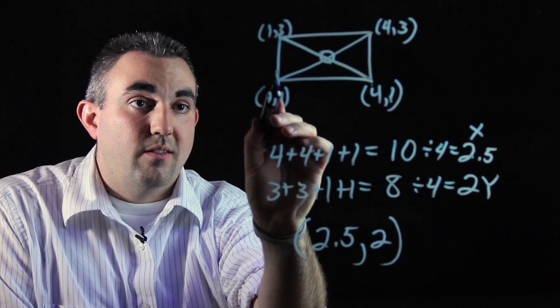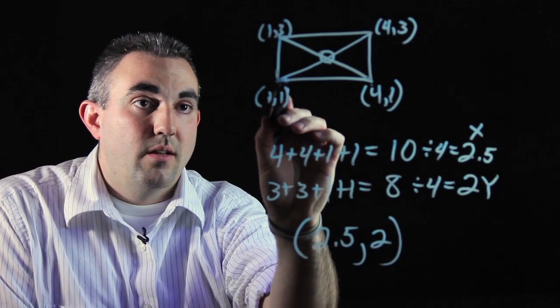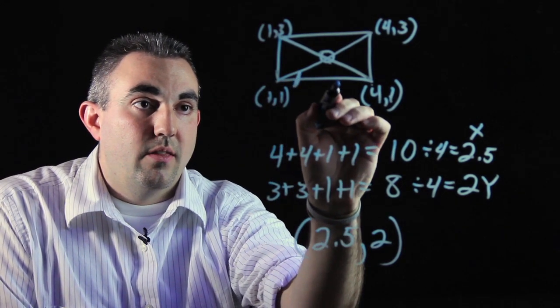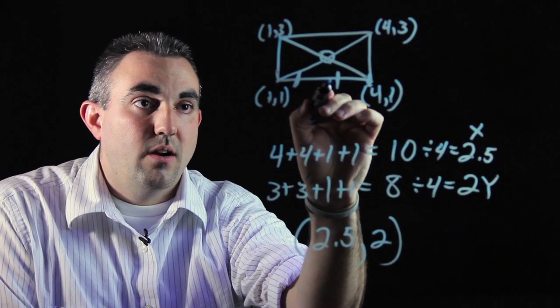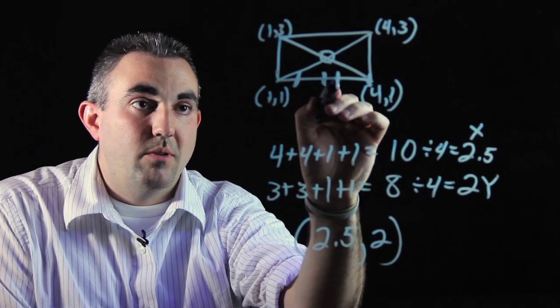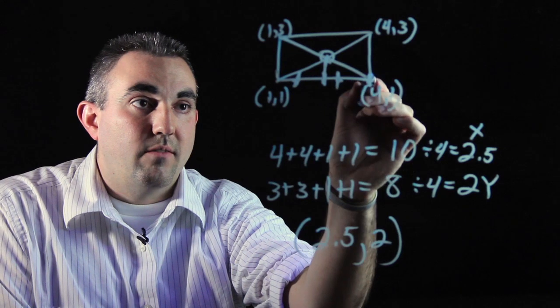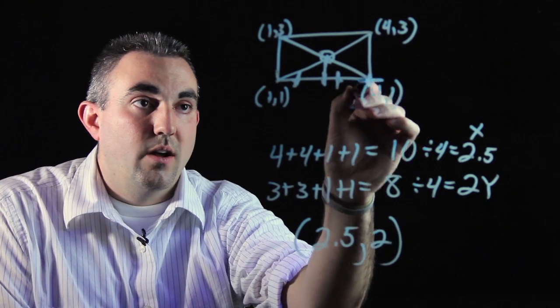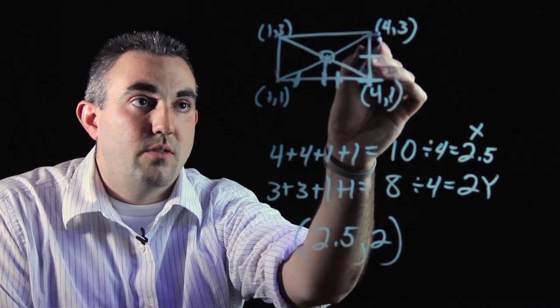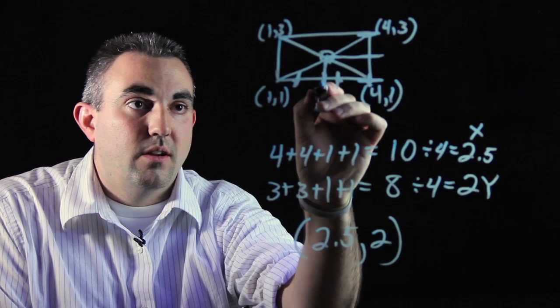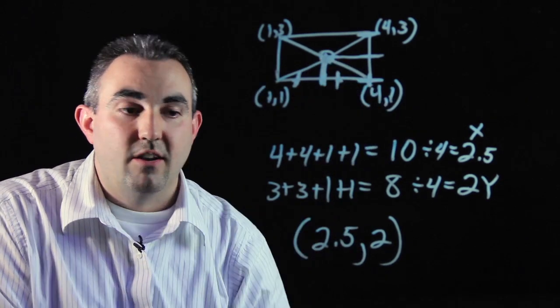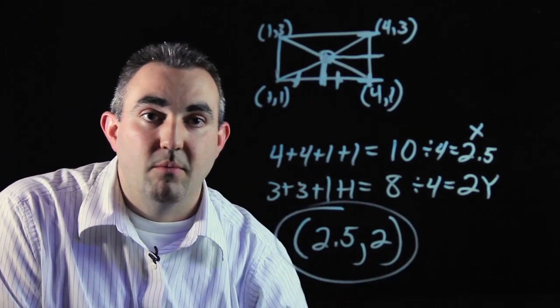So if this is one and this is four, this would be two, this would be three, this would be four. 2.5 is somewhere right in between two and three. And if this is one, two, three, here's two, here's 2.5, and that's where our centroid is: 2.5 comma two.